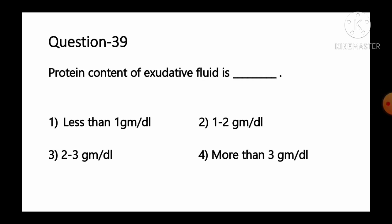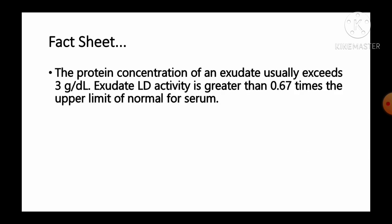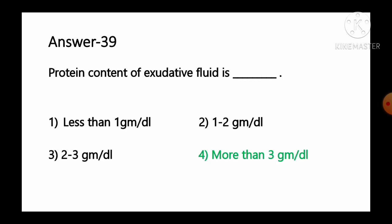Question number 39: Protein content of exudative fluid is — option 1 less than 1 g/dL, option 2 1 to 2 g/dL, option 3 2 to 3 g/dL, option 4 more than 3 g/dL. The protein concentration of an exudate usually exceeds 3 grams per deciliter, and exudate LDH activity is greater than 0.67 times the upper limit of normal protein content of serum. So option number 4, more than 3 g/dL, is the correct answer.